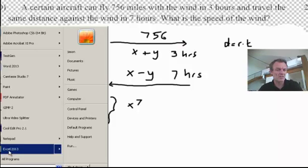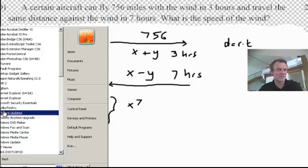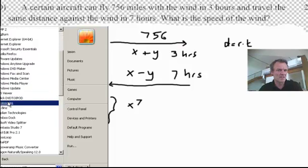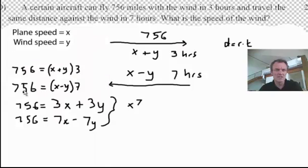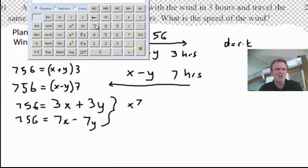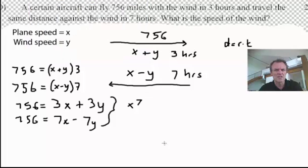So, I'm going to have to get my calculator up. So, 7 times 756 equals... 5292 equals. And everything by 7 here is going to give me 21x and 21y.